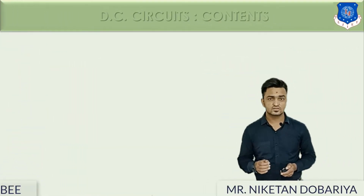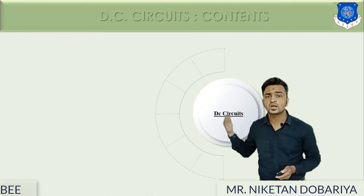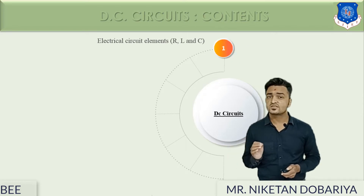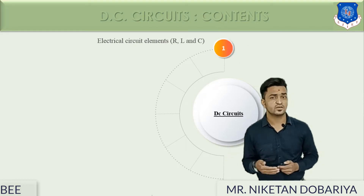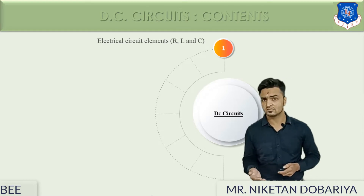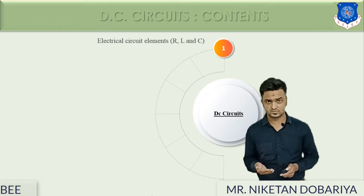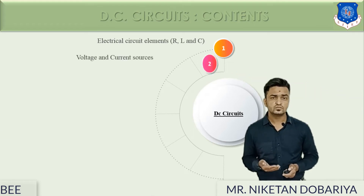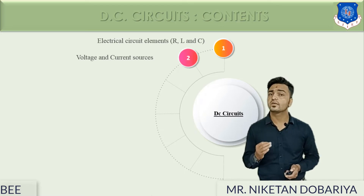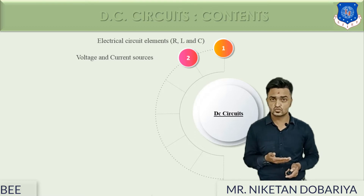The first chapter is DC circuits. Here we have the contents of DC circuits. We will start with basic circuit elements — what is resistance, what is inductance, what is capacitance, how they are constructed, how they work. Next, we will discuss various sources of electricity, meaning various voltage sources and various current sources.